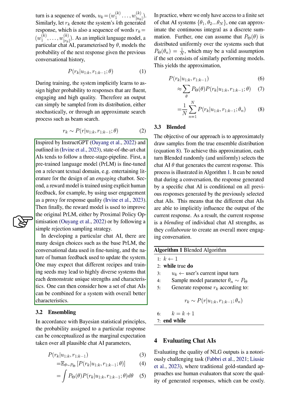In line with Bayesian statistical principles, the probability assigned to a particular response can be thought of as the average expectation taken over all plausible chat AI parameters. In practice, where we only have access to a finite set of chat AI systems, we can approximate the continuous integral as a discrete summation. Our approach aims to draw samples from the true ensemble distribution. To achieve this, each turn randomly selects the chat AI that generates the current response. During a conversation, the response generated by a specific chat AI is conditional on all previous responses generated by the previously selected chat AIs. This means that the different chat AIs can influence the output of the current response. As a result, the current response is a blend of individual chat AI strengths, creating a more engaging conversation overall.